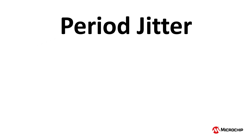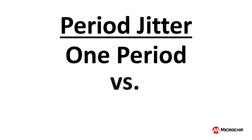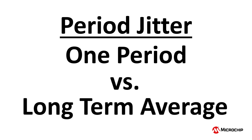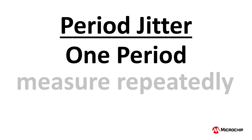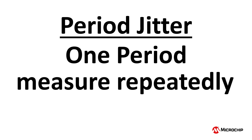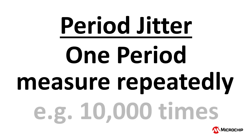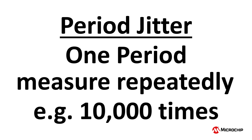Period jitter is the deviation in size of one clock period from its long-term average period. This value is measured repeatedly for a large number of clock cycles or periods, where 10,000 or more cycles is a pretty common choice.